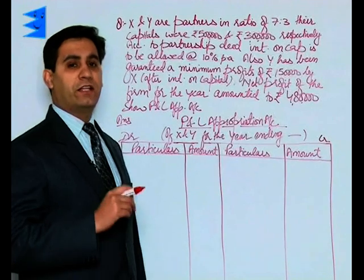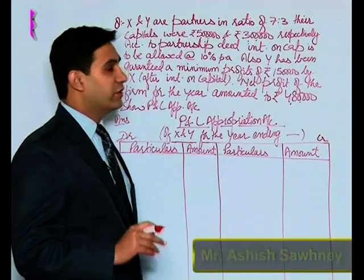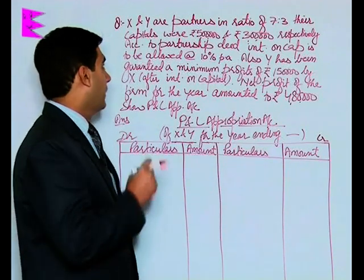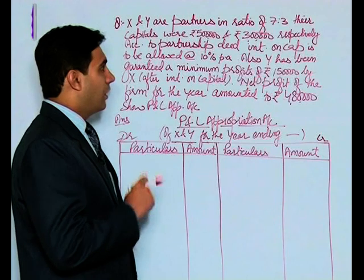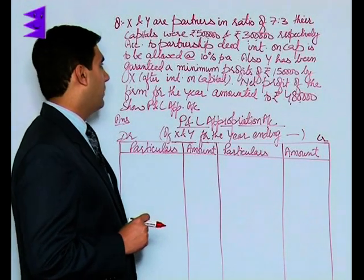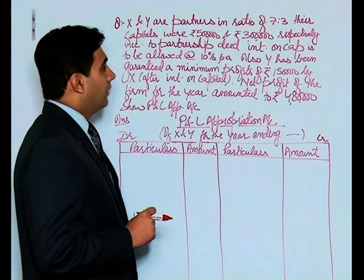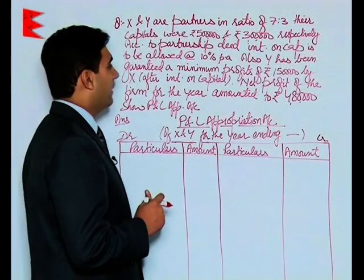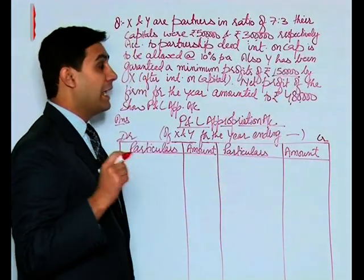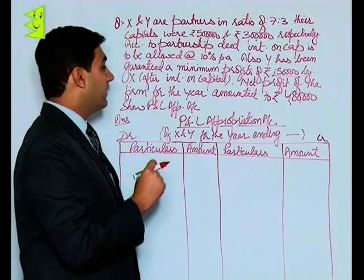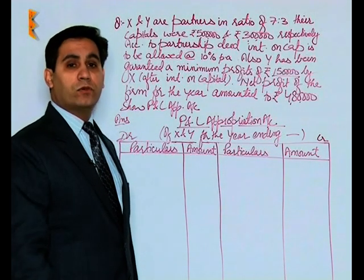Coming to another example on guarantee of profits. In this question, X and Y are partners in the ratio of 7:3. Their capitals were 5 lakh and 3 lakh respectively. According to the partnership deed, interest on capital is to be allowed at 10% per annum. Also, Y has been guaranteed a minimum profit of rupees 1 lakh 50,000 by X after interest on capital. That means the guarantee is on profits left over after providing interest on capital.